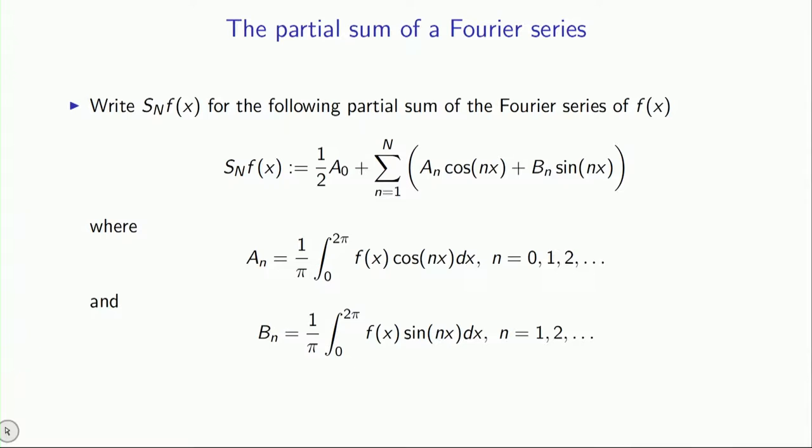So what we have here are partial sums. That is, we look at the sum only up to some level, up to some level capital N. That is, we only look at cosines and sines, up to cosine of capital Nx and sine capital Nx. But with the coefficients defined exactly as before, and we want to understand how this sequence of functions converges as N goes to infinity.